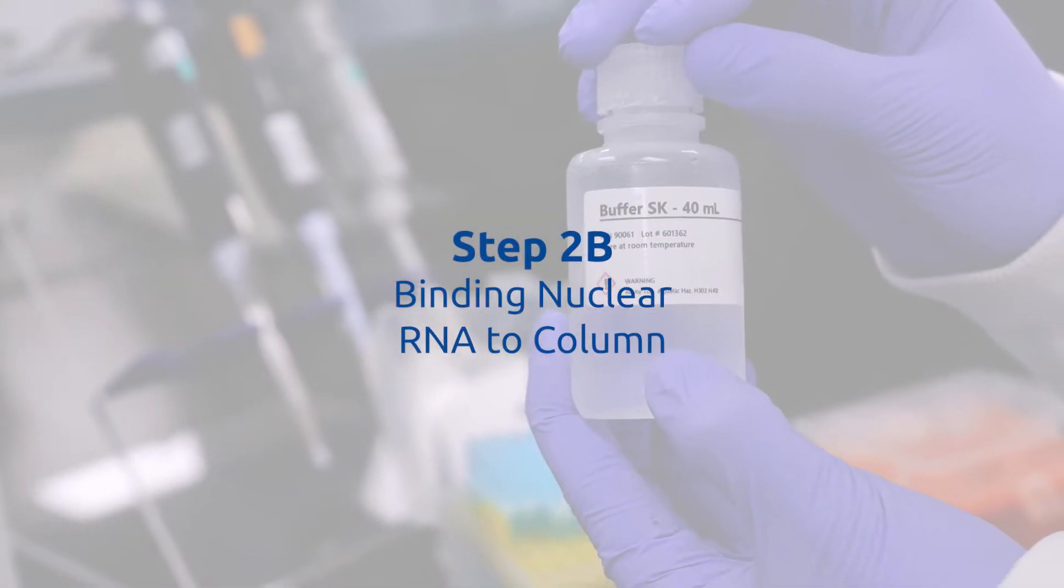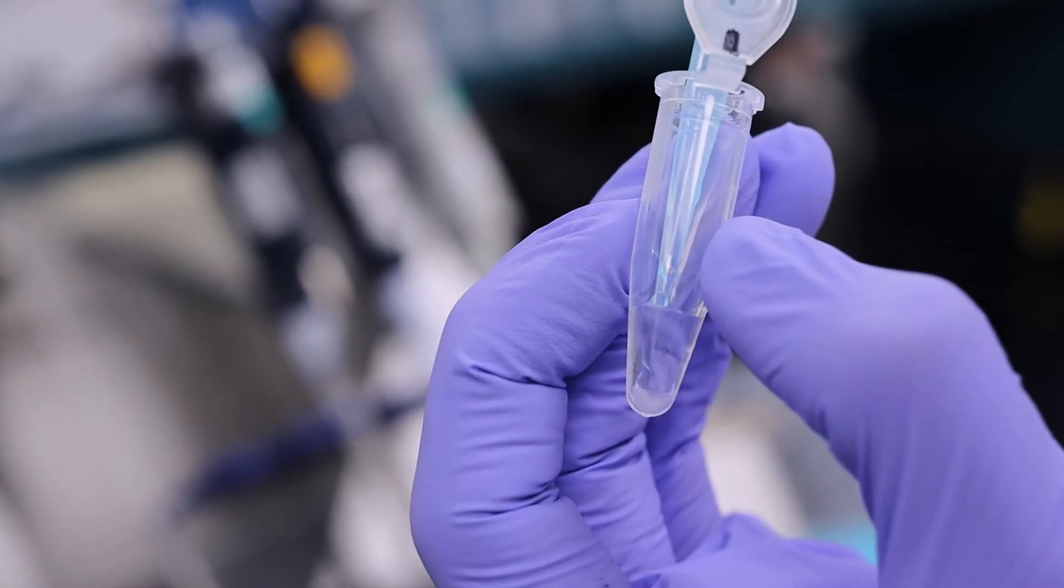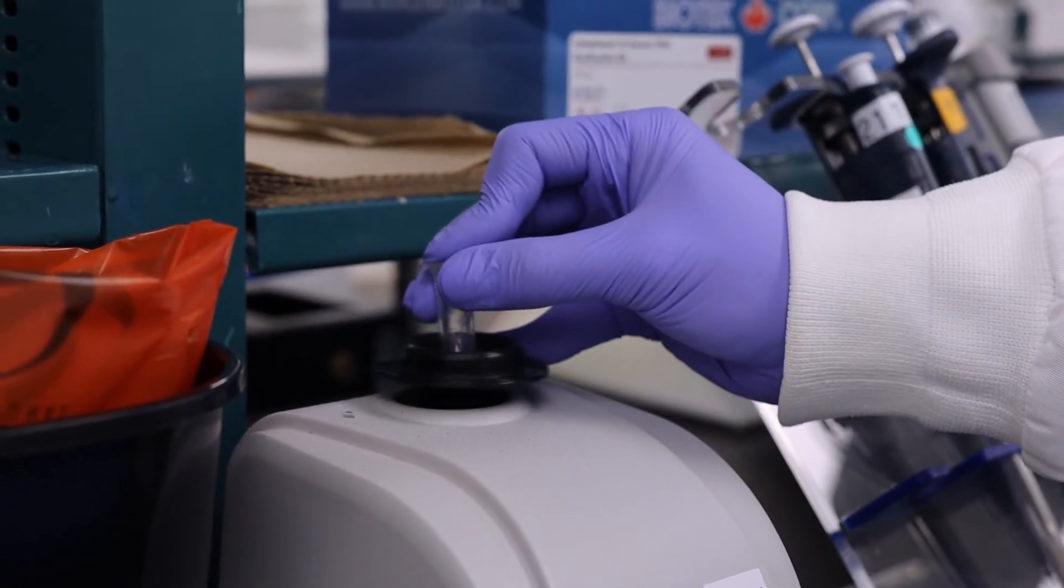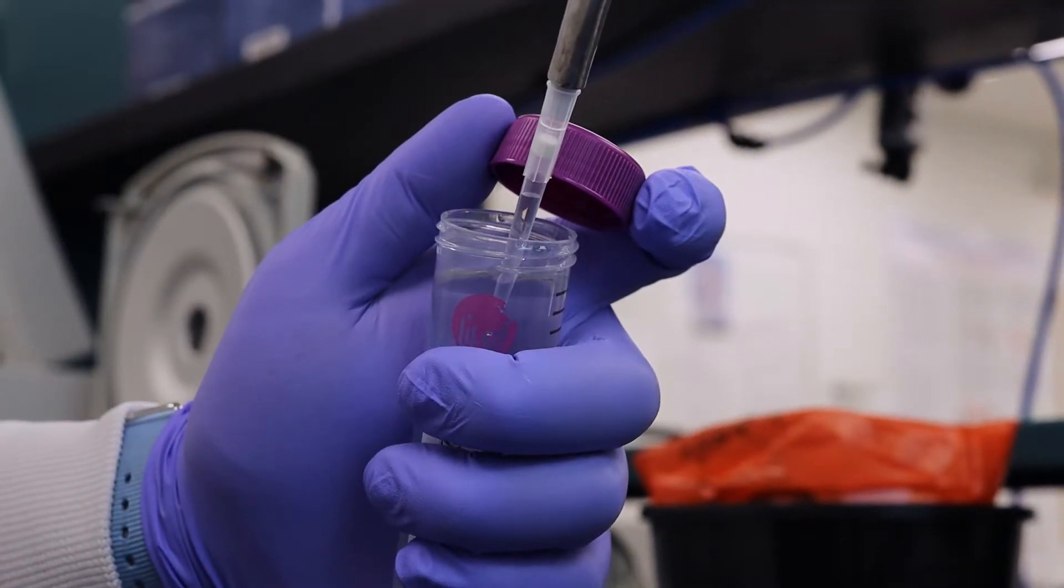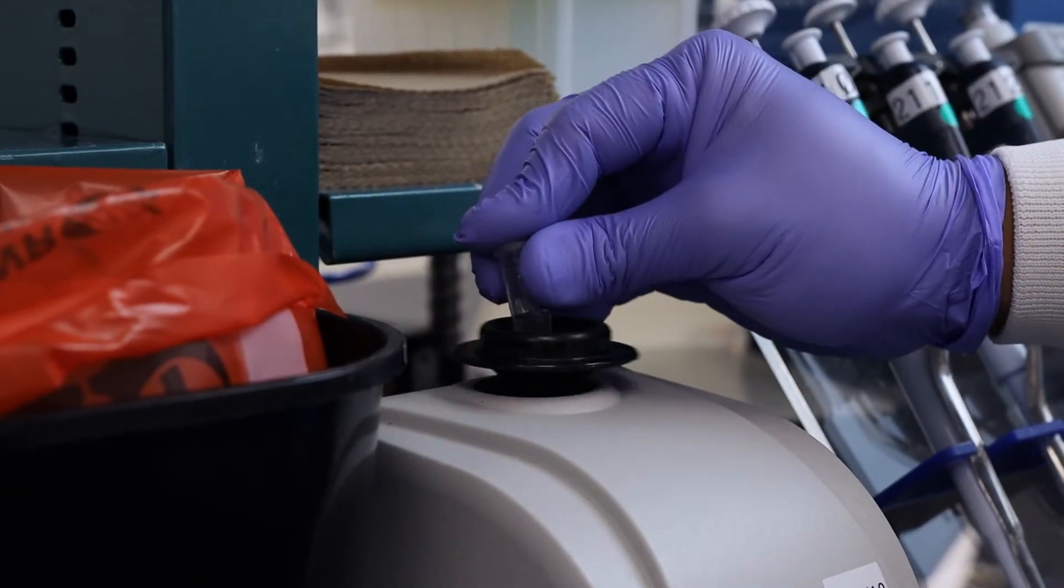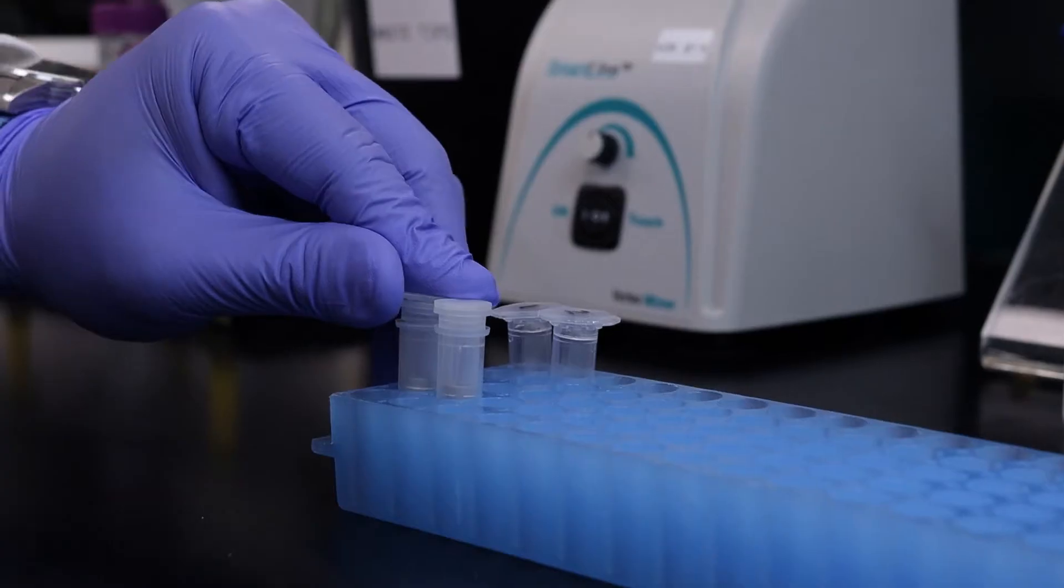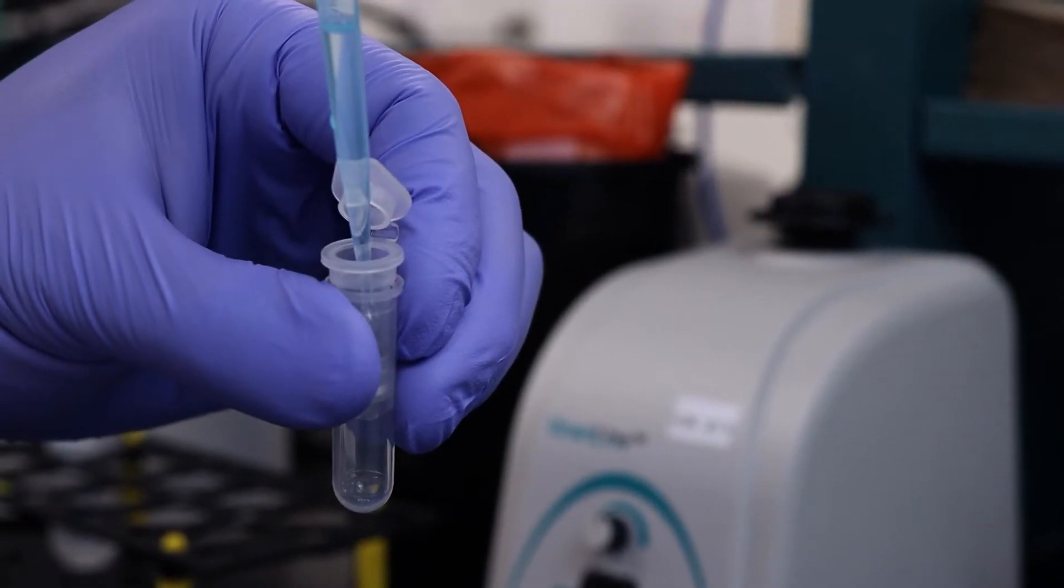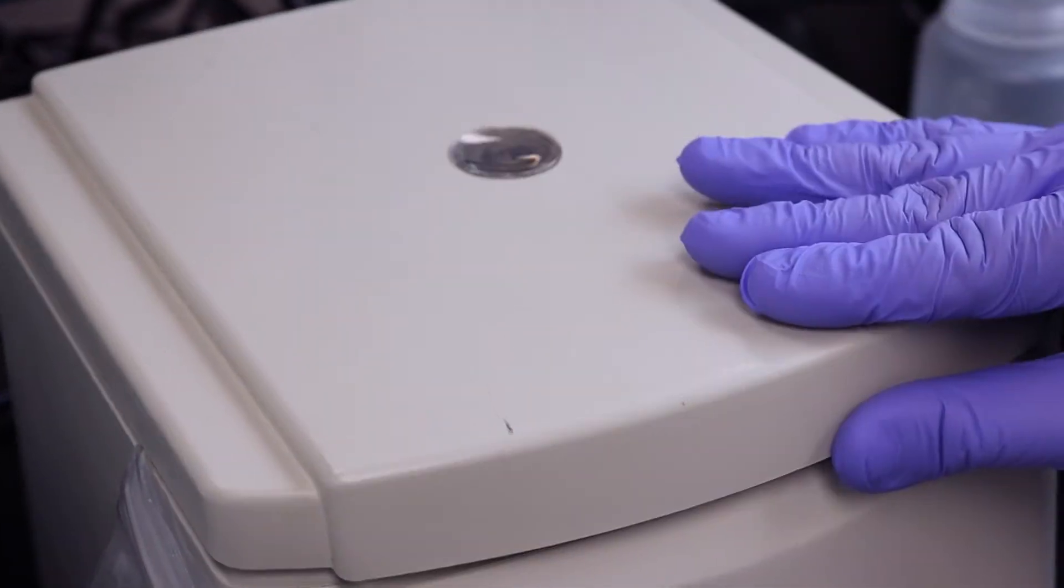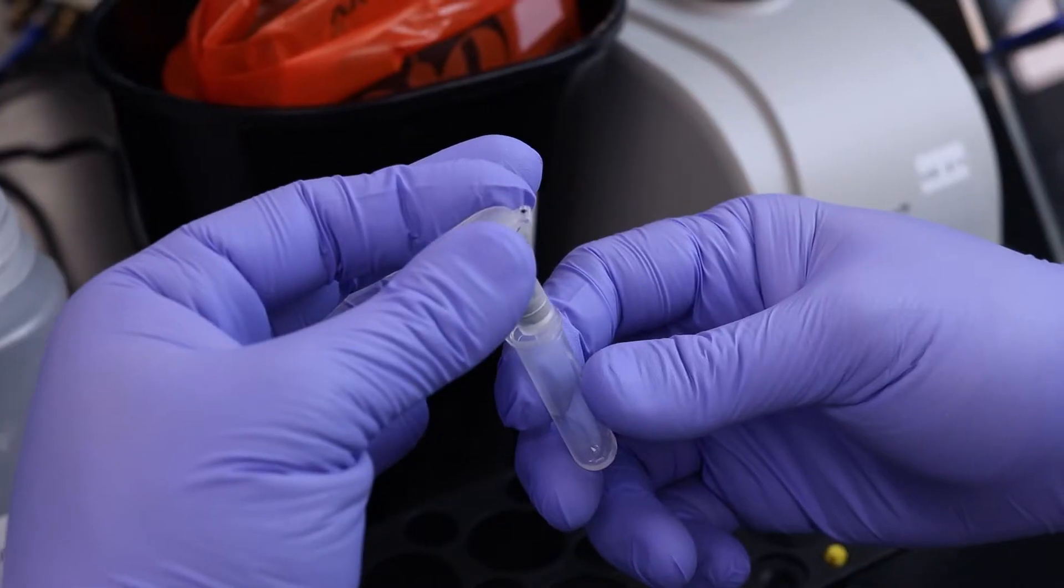Step 2b: Binding nuclear RNA to the column. Add 400 microliters of buffer SK to the pellet nuclear RNA fraction. Mix by vortexing for 10 seconds. Add 200 microliters of 96 to 100% ethanol to the mixture. Mix by vortexing for 10 seconds. Apply the mixture onto a spin column assembled with a collection tube. Centrifuge for 1 minute at 3500g or 6000rpm. Discard the flow-through and reassemble the spin column with its collection tube.